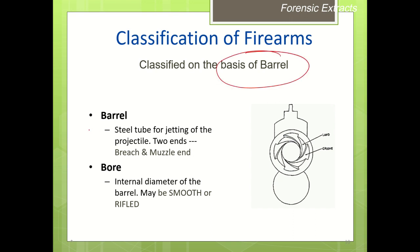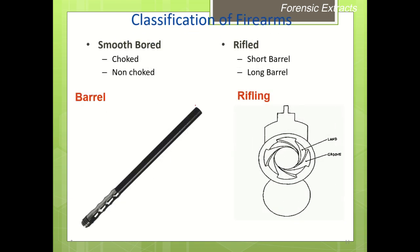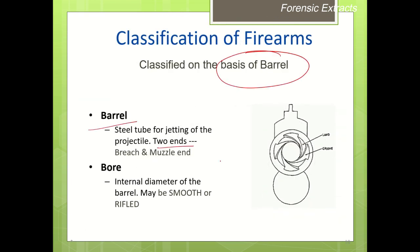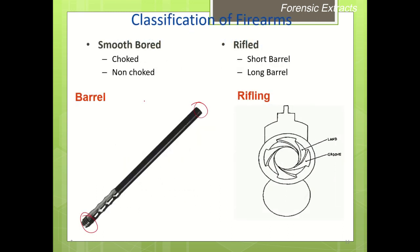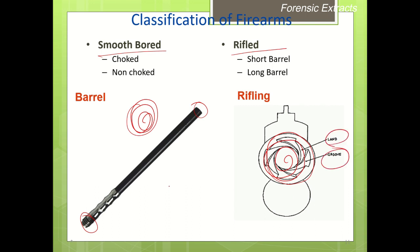The barrel is a steel tubing with two ends — the muzzle end and the breech end. Firearms can be classified based on the condition of the bore, whether it is smooth or rifled. A smooth bore firearm has a barrel without any spiraling or rifling inside, while a rifled barrel has characteristic spiraling and lands and grooves inside the barrel.